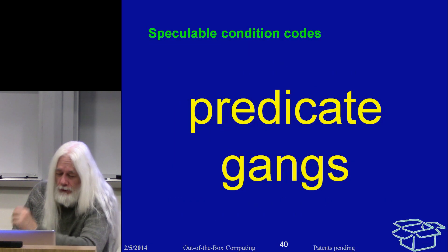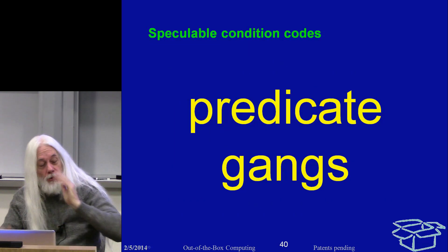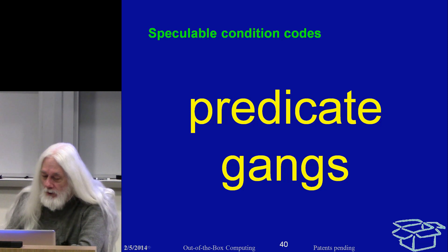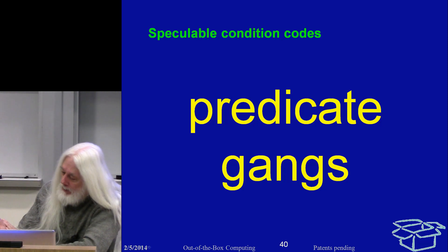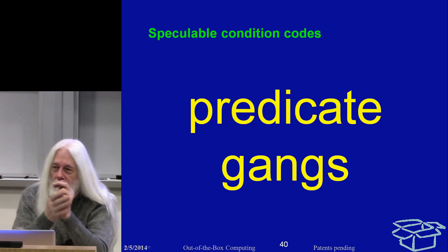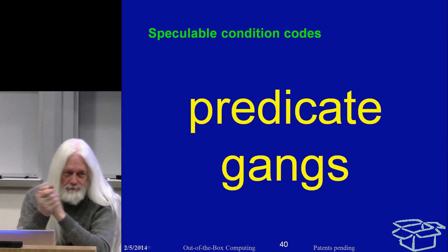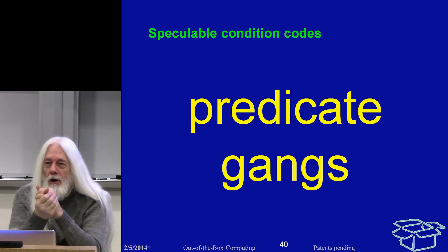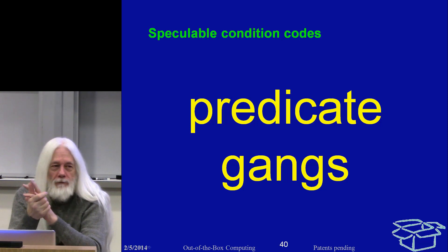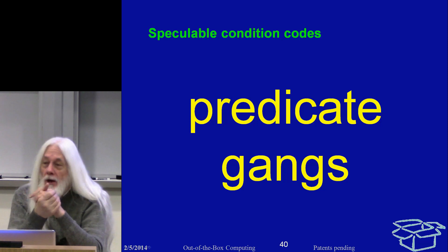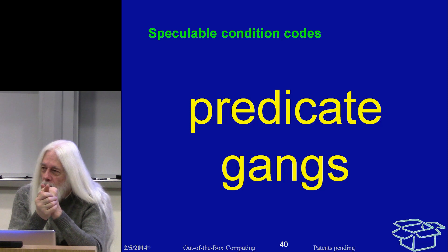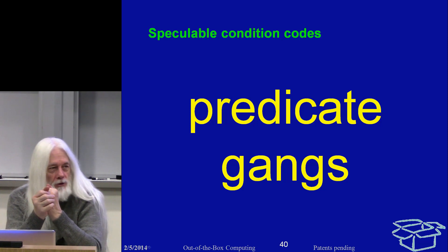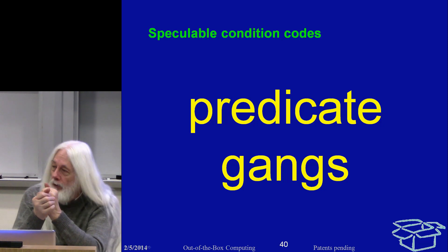Ganging is used any time you need more than two inputs, but it actually has other uses as well. One of those is what we call predicate gangs. Let me introduce you to the bane of CPU design: condition codes. Condition codes are side-effect byproducts of ALU operations where bits are set in the program status word indicating whether the add you just did had a result that was zero, greater than zero, less than zero, had a carry, overflowed, or what have you.